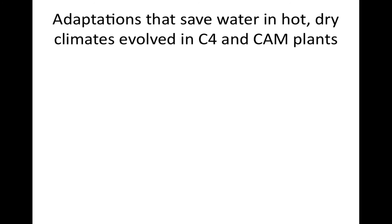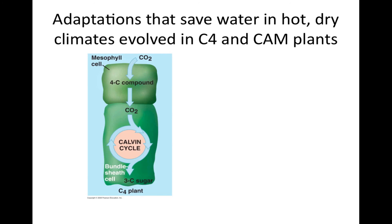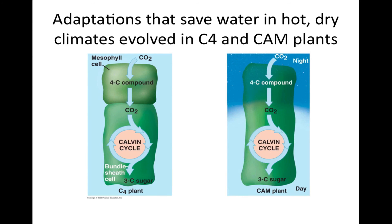Adaptations that save water in hot, dry climates evolved in C4 and CAM plants. Closing stomata on a hot, dry day is an adaptation that reduces water loss, but it also prevents carbon dioxide from entering the leaf and oxygen from leaving. Such plants are called C3 plants because the first organic compound produced is the 3-carbon compound 3-PGA. CAM plants are species adapted to very dry climates. A CAM plant conserves water by opening its stomata and taking in carbon dioxide only at night. When carbon dioxide enters the leaves, it is fixed into a 4-carbon compound. The 4-carbon compound in a CAM plant banks carbon dioxide at night and releases it to the Calvin cycle during the day.